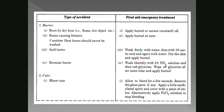For bromine burns, wash liberally with 2% NH3 ammonia solution, then rub with glycerin, wipe off the glycerin after some time, and apply burn oil.